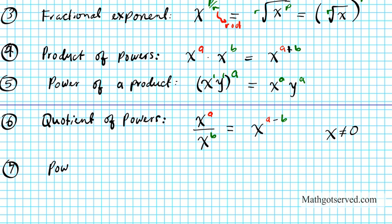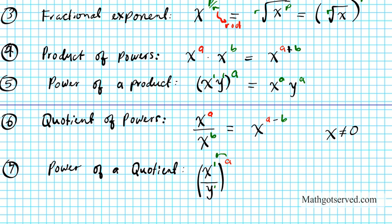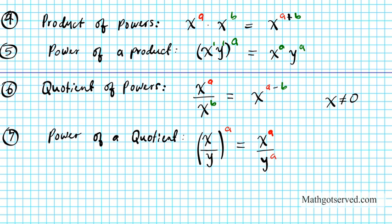Property seven: what if we have the power of a quotient? Power of a quotient means you have a quotient x over y being raised to a power, let's say power a. It's just the same as the power of a product — this power gets distributed to the numerator and the denominator. So the property yields x to the a divided by y to the a. There is a special requirement: y cannot be zero, or else you'd be dividing by zero and you'd have an undefined expression.